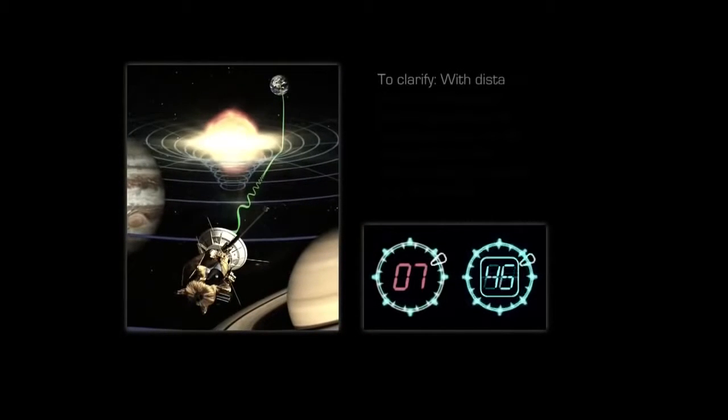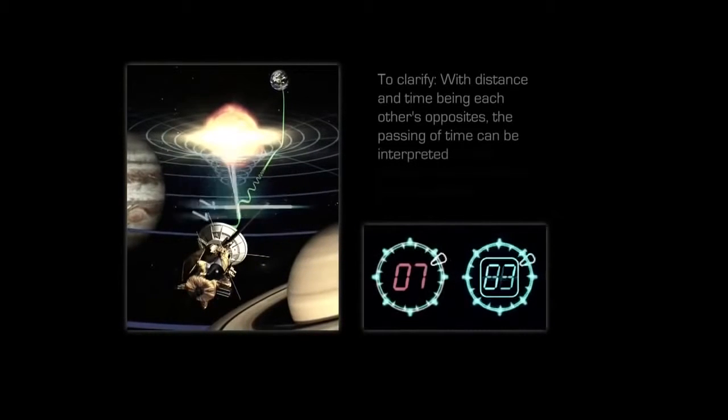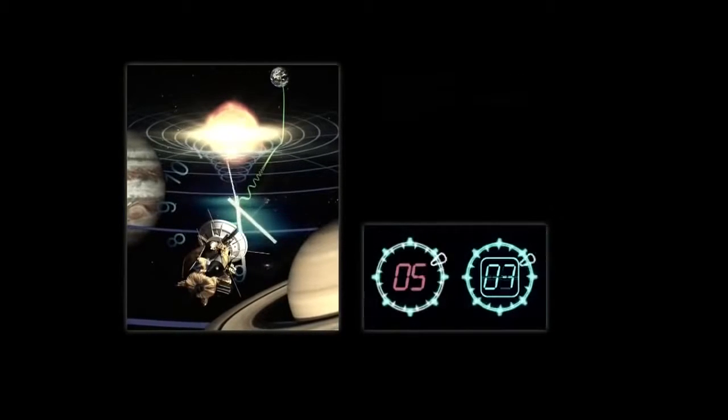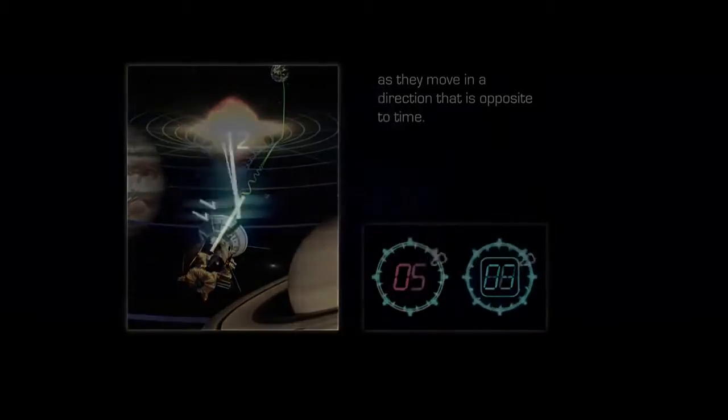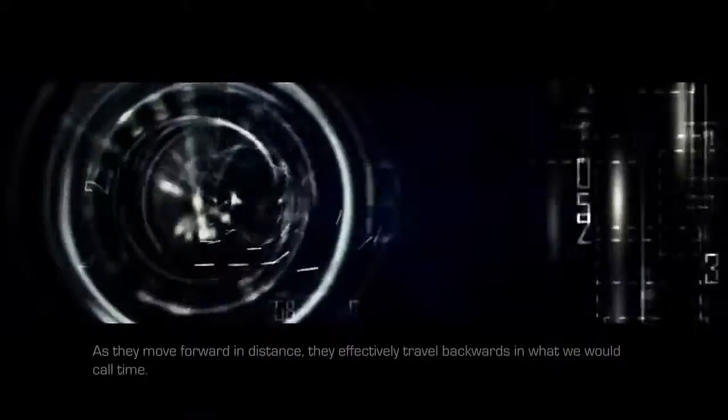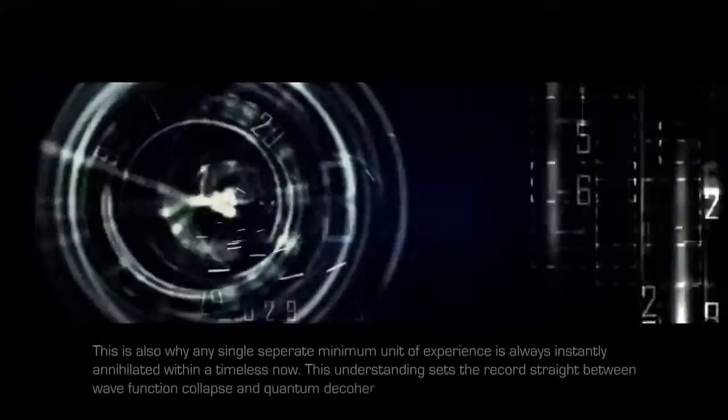To clarify, with distance and time being each other's opposites, the passing of time can be interpreted as the distance that the hands of a clock travel as they move in a direction that is opposite to time. As they move forward in distance, they effectively travel backwards in what we would call time. This is also why any single separate minimum unit of experience is always instantly annihilated within a timeless now. This understanding sets the record straight between wavefunction collapse and quantum decoherence.